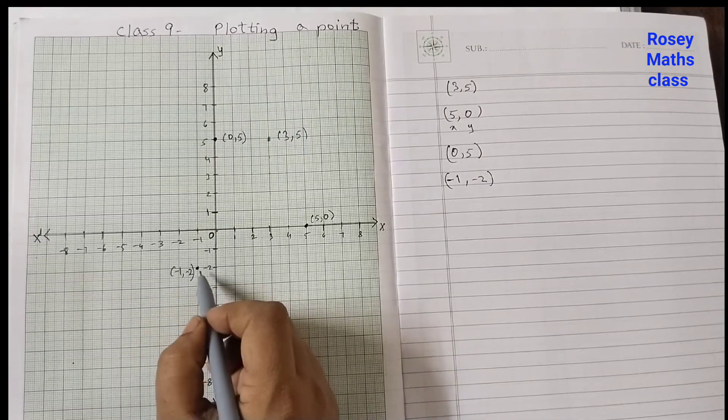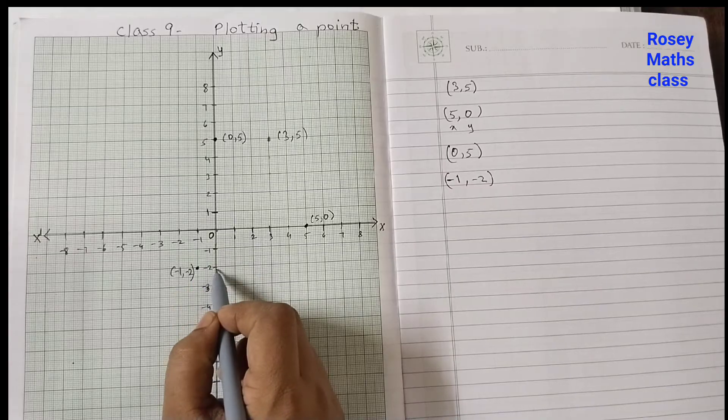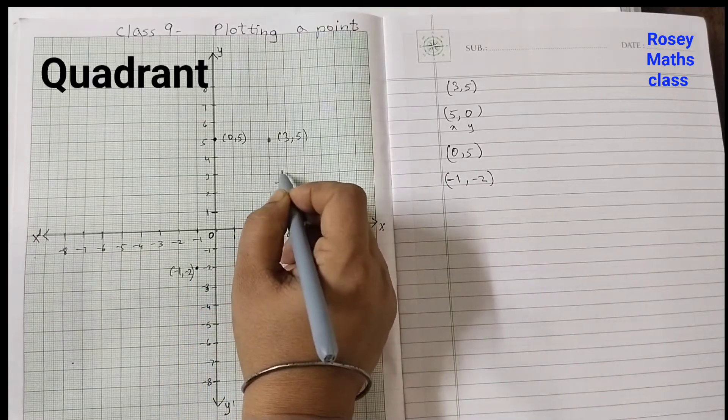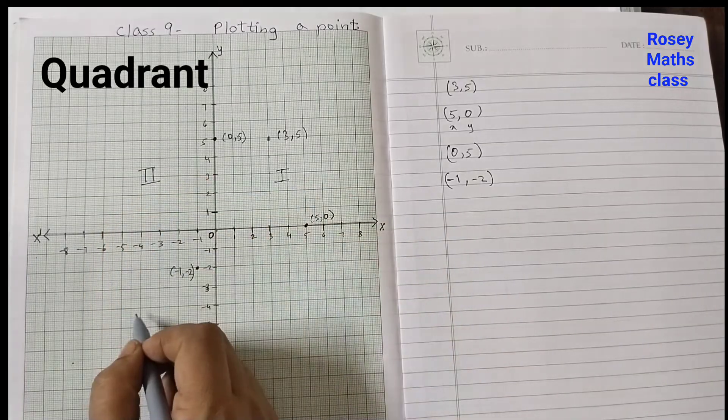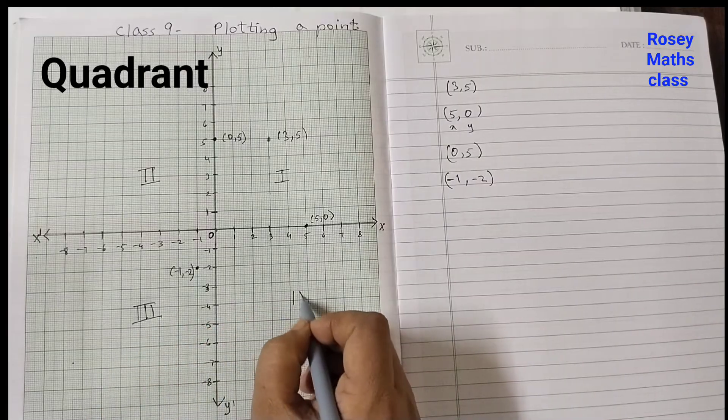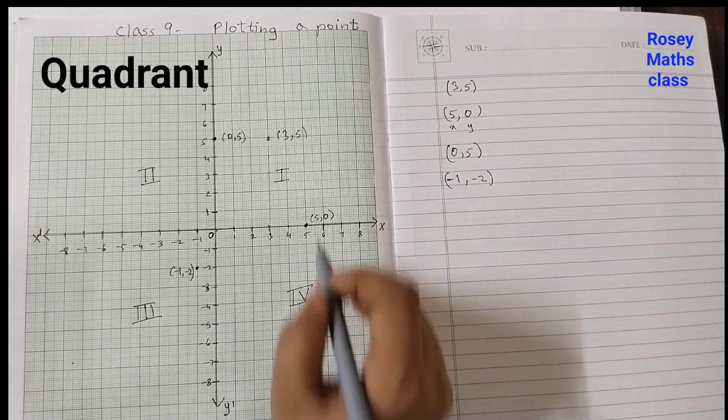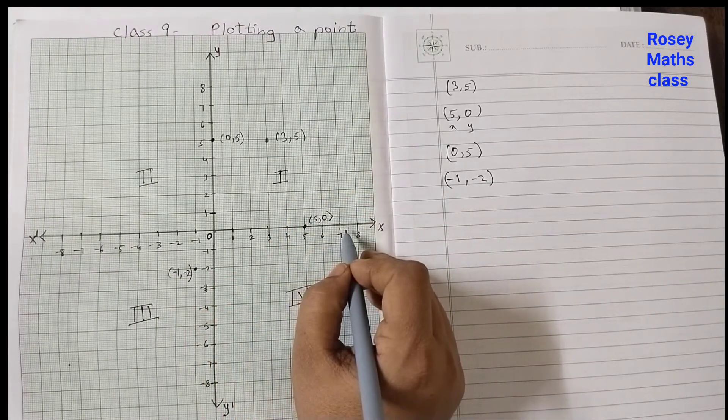So this point here is minus one, minus two. If you draw a line straight up you will see it's falling on minus one, and right you will see minus two. Also remember: this is quadrant one, quadrant two, quadrant three, and quadrant four. So it is divided into four quadrants.